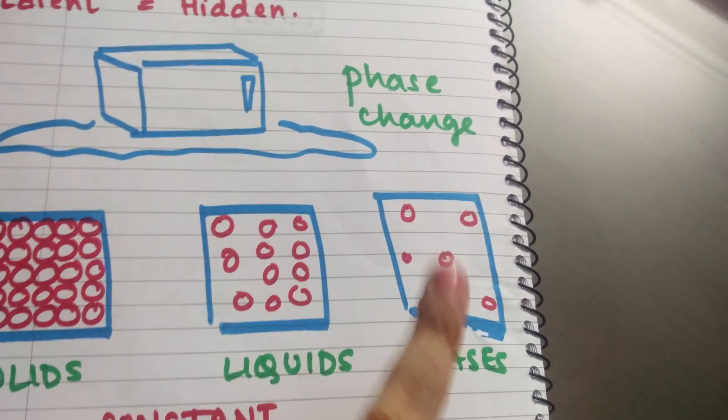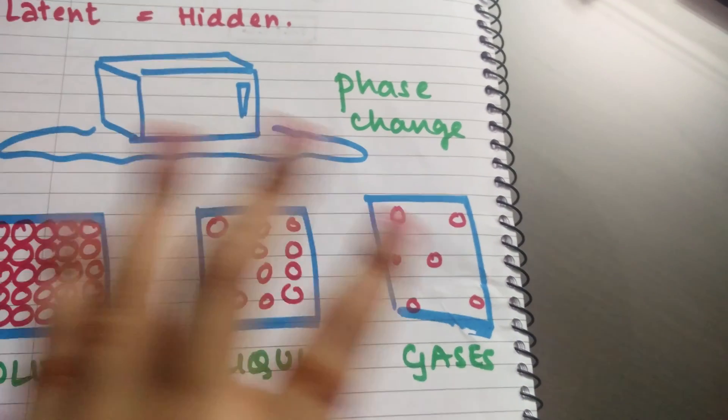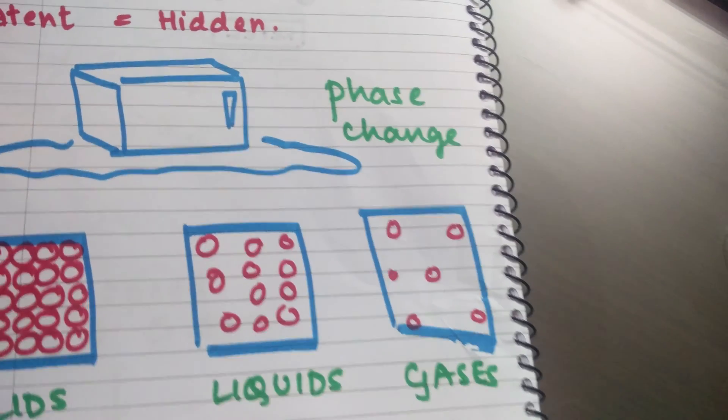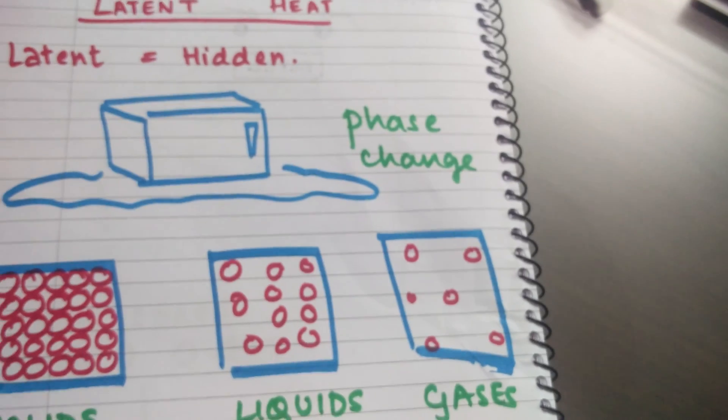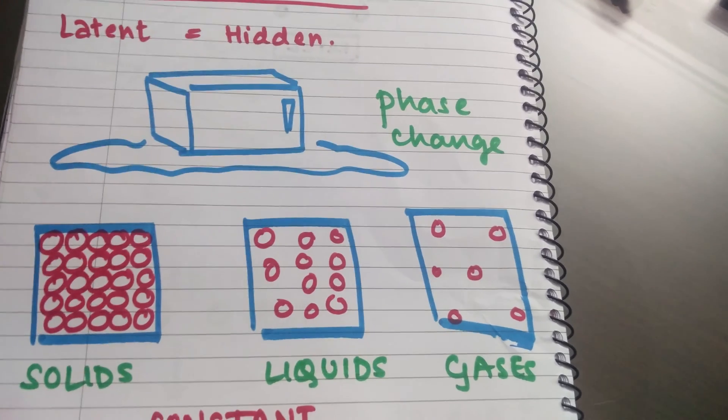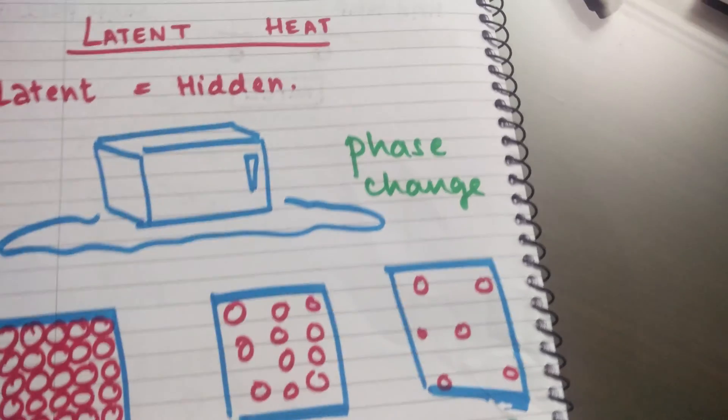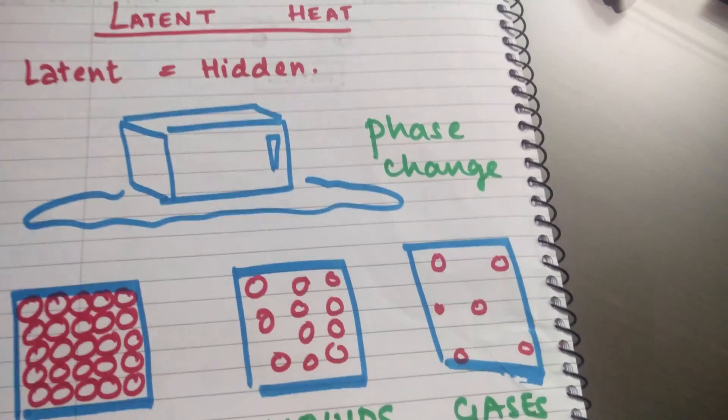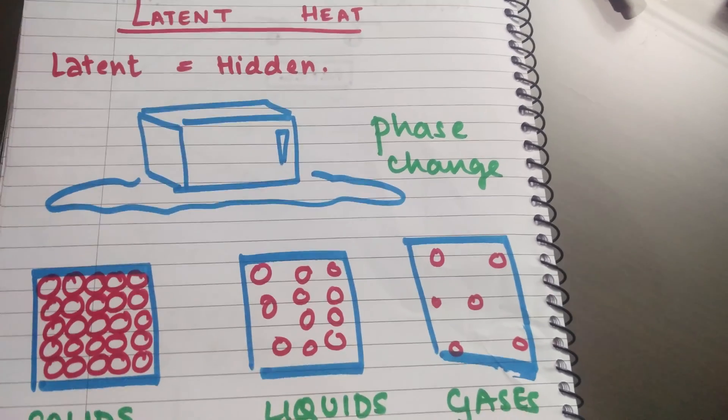Similarly, when a liquid is evaporating to form a gas, all that heat is going to be used up to separate them, make them go further apart from each other as opposed to the intermolecular force of attractions. That is why all the heat is used up in just changing the state of matter and separating the molecules, making them go away from each other or come closer to each other.